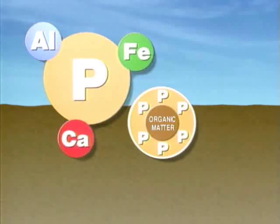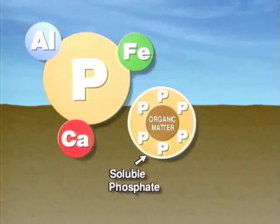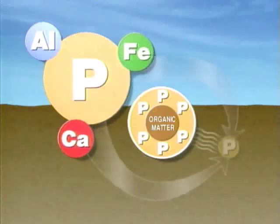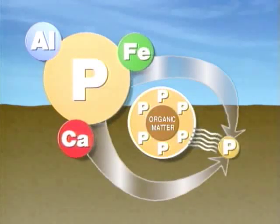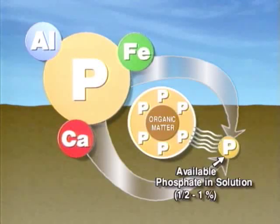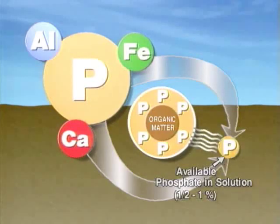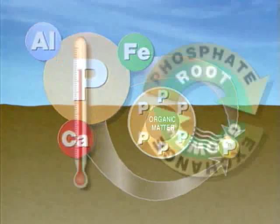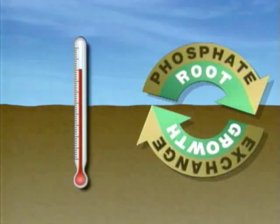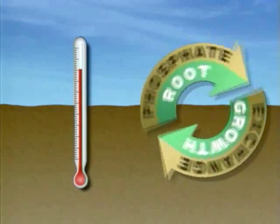The phosphate that is maintained on the surface of the organic material and the minerals is called the soluble phosphate. When this combines with existing moisture in the soil, it becomes phosphate in solution. Only one-half to one percent of total phosphate is in this form, and it's this phosphate in solution that the plant can readily use. When conditions are ideal, the phosphate in solution is replenished regularly and provides all the phosphate needed by the plant.